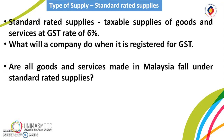The first point of type of supply is the standard-rated supplies. Standard-rated supplies are taxable supplies of goods and services which are subject to a GST rate of 6%. A company who is registered for GST has to collect GST on the supply and is eligible to claim input tax credits on his business inputs in making taxable supplies.